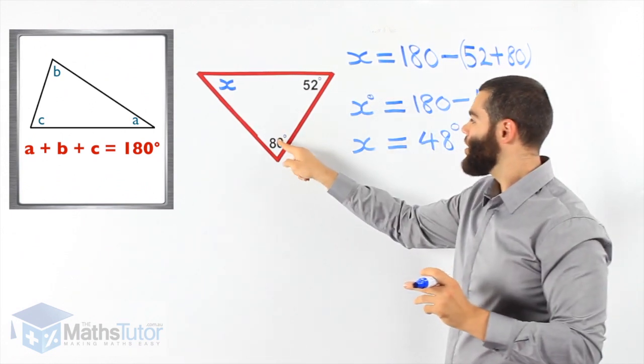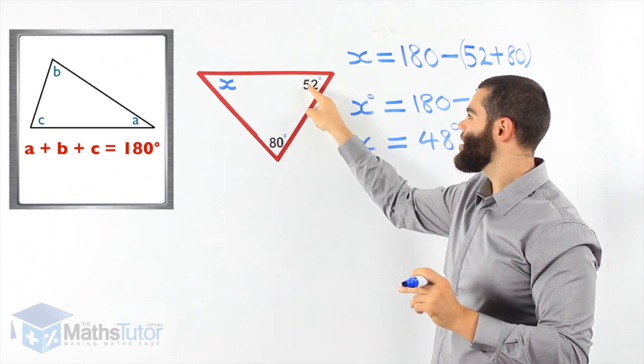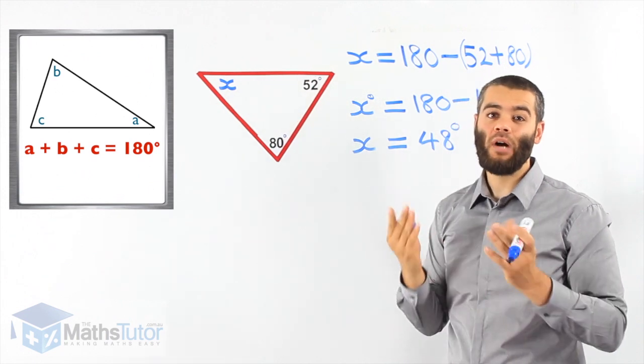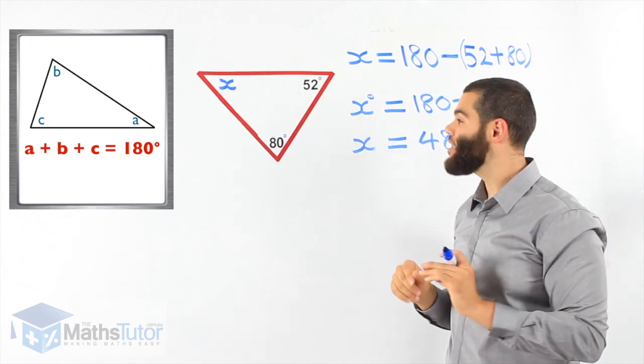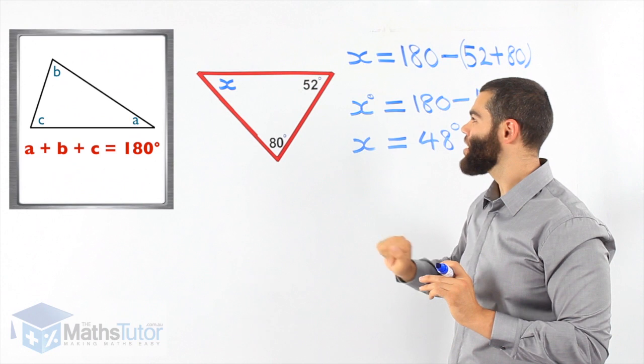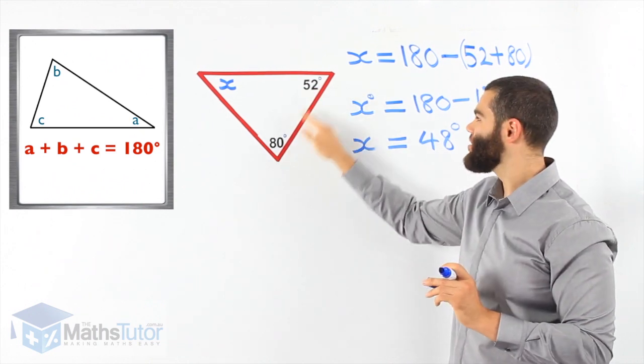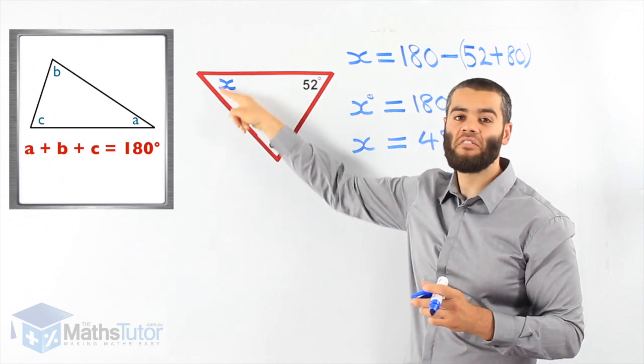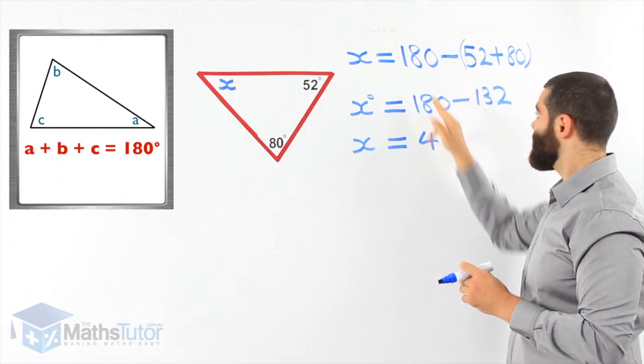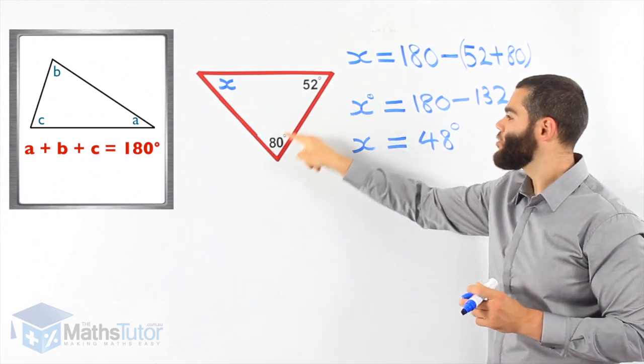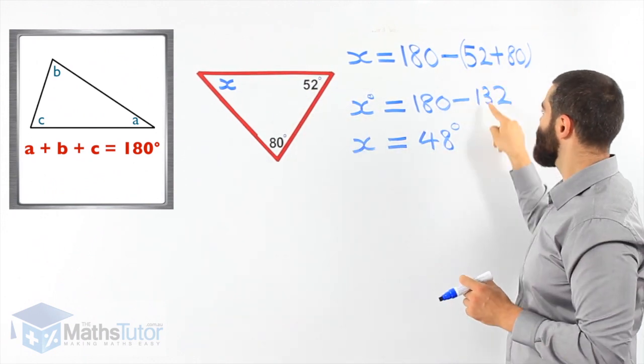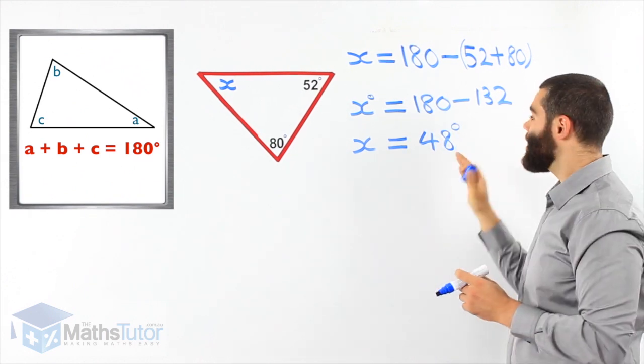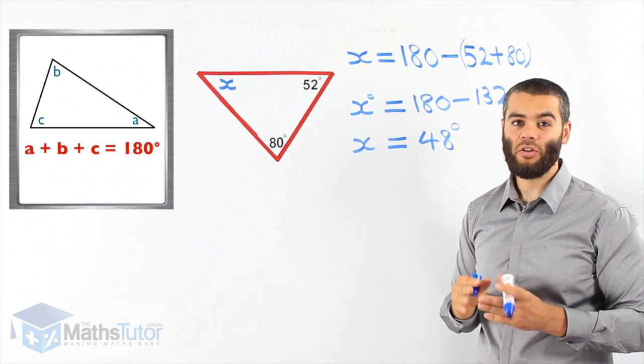Here we know angle with the 80, another angle with 52. This angle is missing. We know all of them add up to 180 degrees. 180 minus 80, 180 minus the 52, minus these two angles together. We're going to be left with what's remaining, which is this angle marked with an X. 180 take away the 52 and the 80, which make up 132. 180 take away 132. X is going to be 48 degrees.